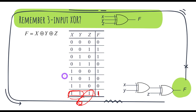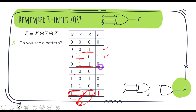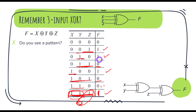You can notice a pattern: wherever the count of ones in the input is odd, this function returns one. For example, when there is one '1' in the input — that's odd — it gives one. When there are two ones — that's even — it gives zero. When there are three ones — that's odd — the output is one. So this XOR function returns one whenever the input has an odd number of ones. We call it an odd function.